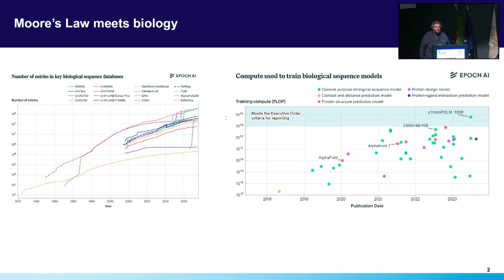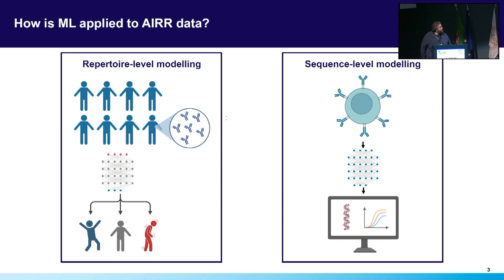That exponential growth manifests in the available data, in the computational power and upper bound of the power of the models that we're seeing, and an explosion in the number of methods as well. Truly exciting times for the application of ML to biological data. I thought just to give a bit of context to the sessions that you'll see following this, I would give a little bit of a framework about how we conceptually divide the types of machine learning models and applications, specifically with respect to immune repertoire data.